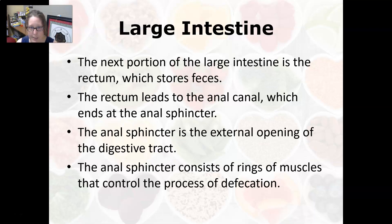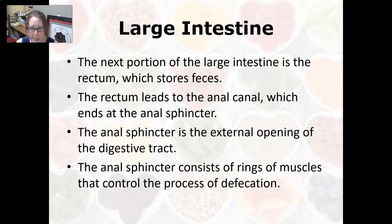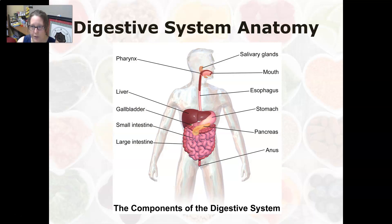The rectum stores feces and leads to the anal canal, which ends at the anal sphincter. The anal sphincter is the external opening of the digestive tract and consists of rings of muscles that control the process of defecation.